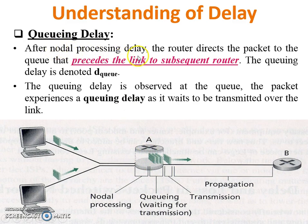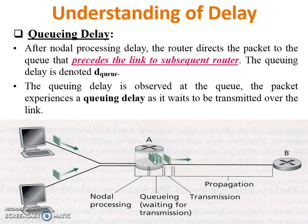Queuing delay. After nodal processing, the router directs the packet to the queue that precedes the link to the subsequent router. The queuing delay is denoted by DQ. In this figure, there are four packets shown — one packet is going from A to B and the remaining three packets are waiting, so those three are experiencing queuing delay. Sometimes queuing delay will be zero if there is no queue at the router. The packet experiences a queuing delay as it waits to be transmitted over the link.